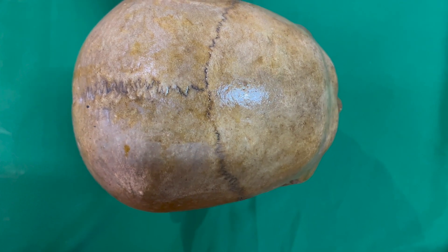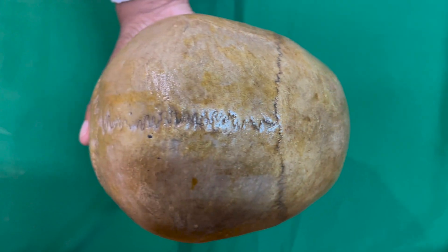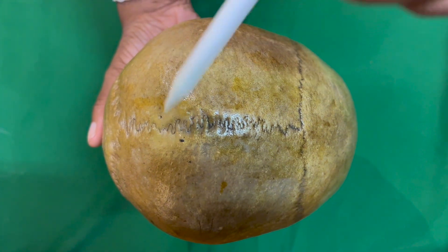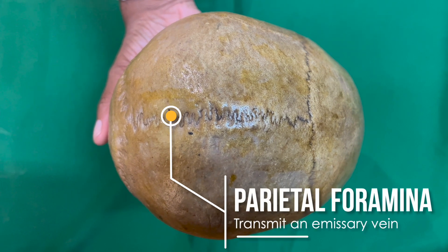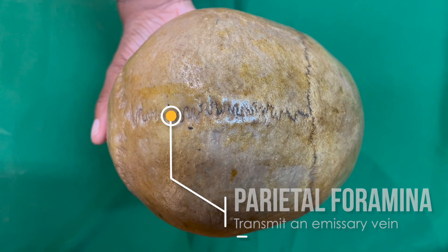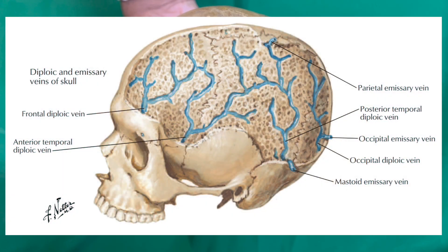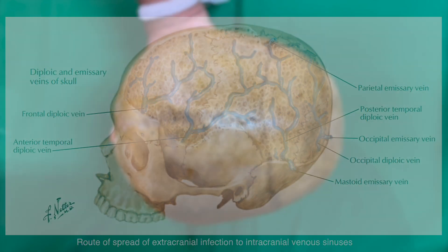The parietal foramina, one on each side, pierce the parietal bone near its upper border. Each transmits an emissary vein from the veins of the scalp to the superior sagittal sinus. These veins are significant as routes of spread of extracranial infections to the intracranial venous sinuses.